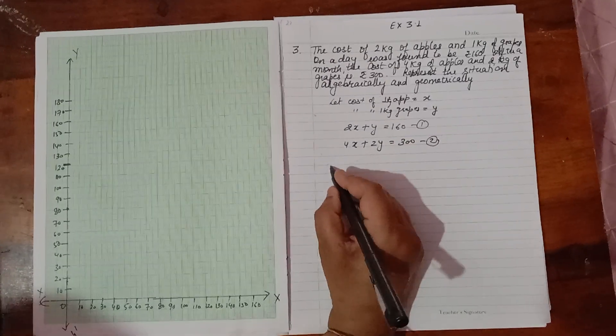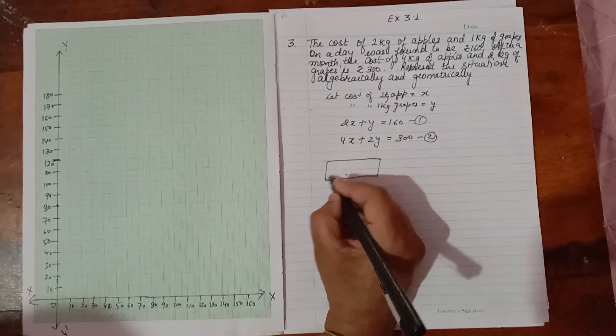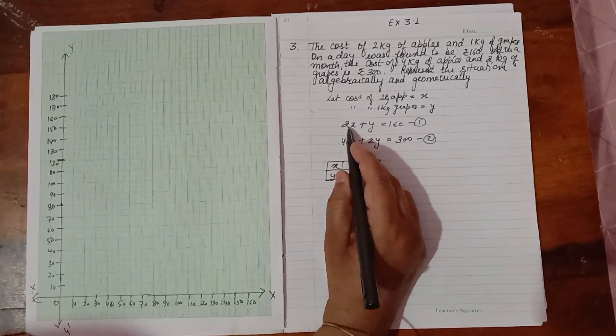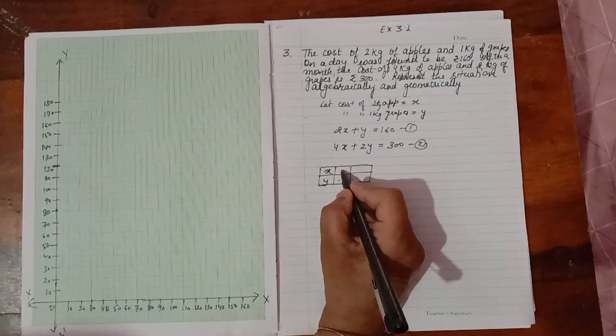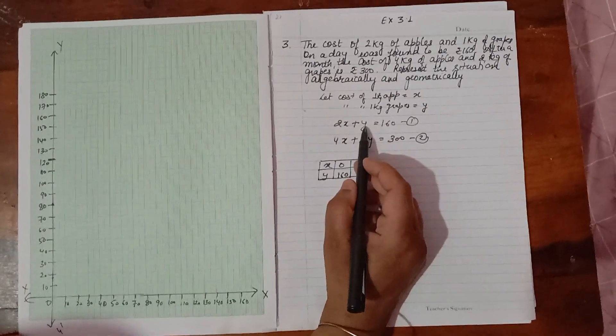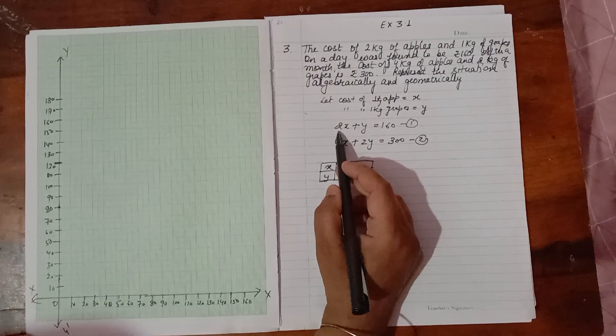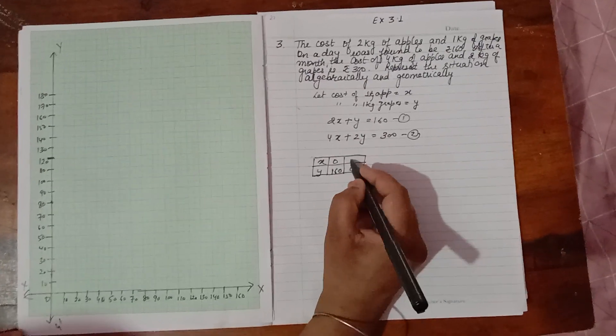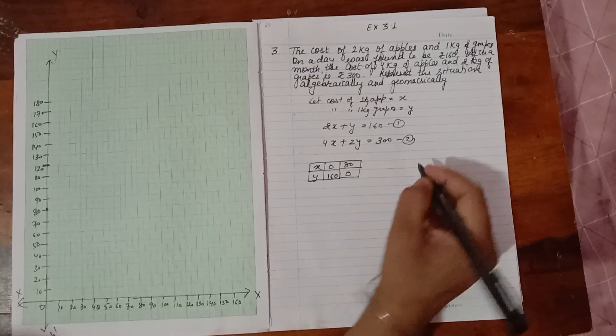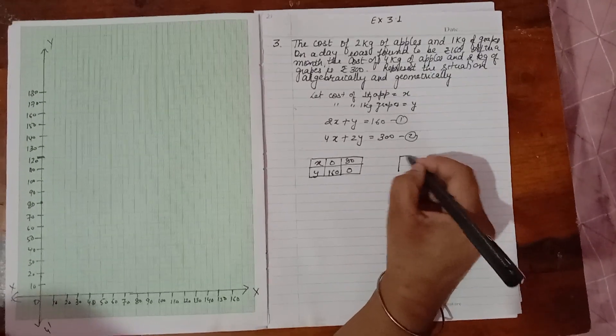Now you can make the table for both equations. First equation: X value, Y value. If X is 0, then Y will be 160. If Y is 0, X will be 160 over 2, that is 80. One more value if you want you can take, otherwise this is sufficient. This is for the second equation.